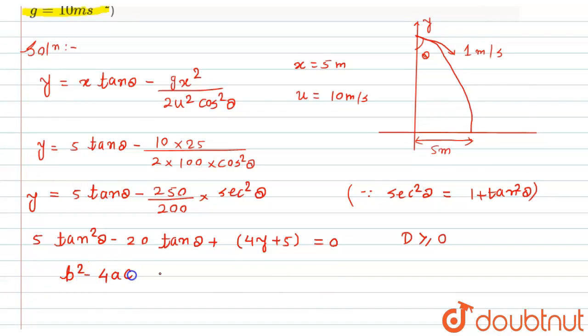and this should be ≥ 0. Here, a = 5, b = 20, and c = 4y + 5. So